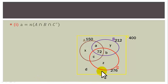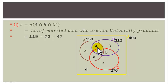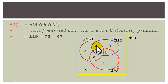Question 1: Region A (A∩B outside C) represents married men who are not university graduates. This equals |A∩B| − 72 = 119 − 72 = 47.